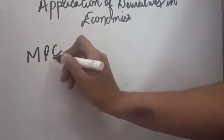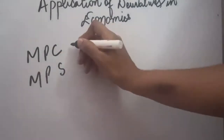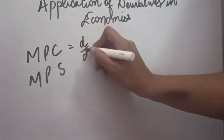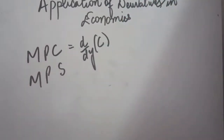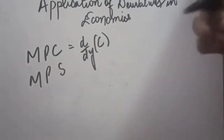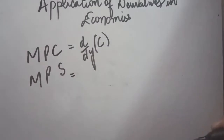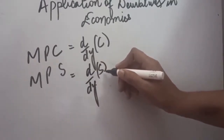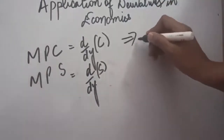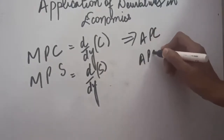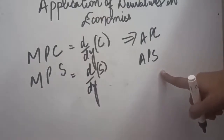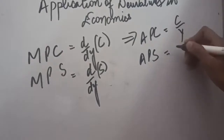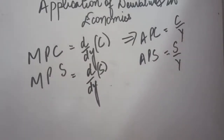Next are marginal propensity to consume (MPC) and marginal propensity to save (MPS). Consumption is a function of income. MPC = derivative of consumption (C) with respect to income (Y), i.e., dC/dY. MPS = dS/dY, the derivative of savings with respect to income. Average propensity to consume (APC) = C/Y, and average propensity to save (APS) = S/Y.